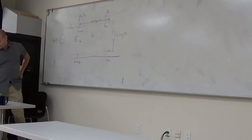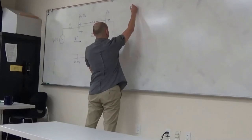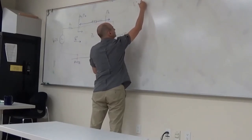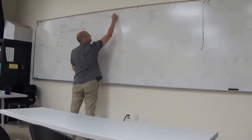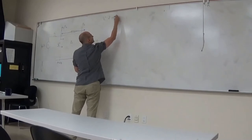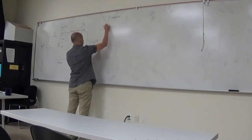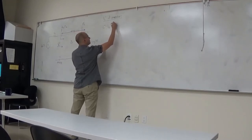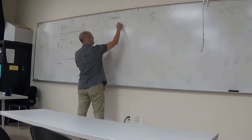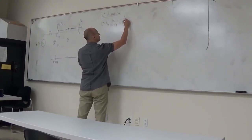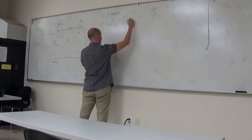The first question asks: what is the voltage V naught plus? This is an equation I recommend you have in your notes. V naught plus at the generator is equal to Vg times Z naught, divided by Z naught plus Zg, multiplied by 1 divided by 1 minus gamma L times gamma G times e to the minus j beta L.